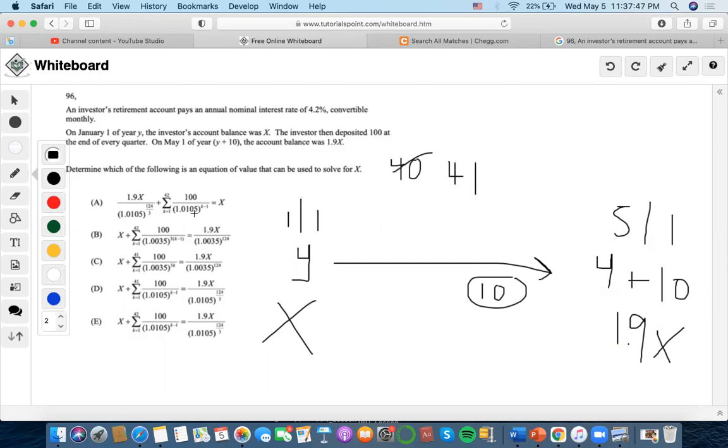So if we look at these answer choices, we could get rid of A because it's 42 payments, 42 payments here, 42 payments here. Now we're left with these two. Now we notice here that it sets up how on top of the initial balance of X, when we make these deposits, it will accumulate to 1.9x, which we are looking for here.